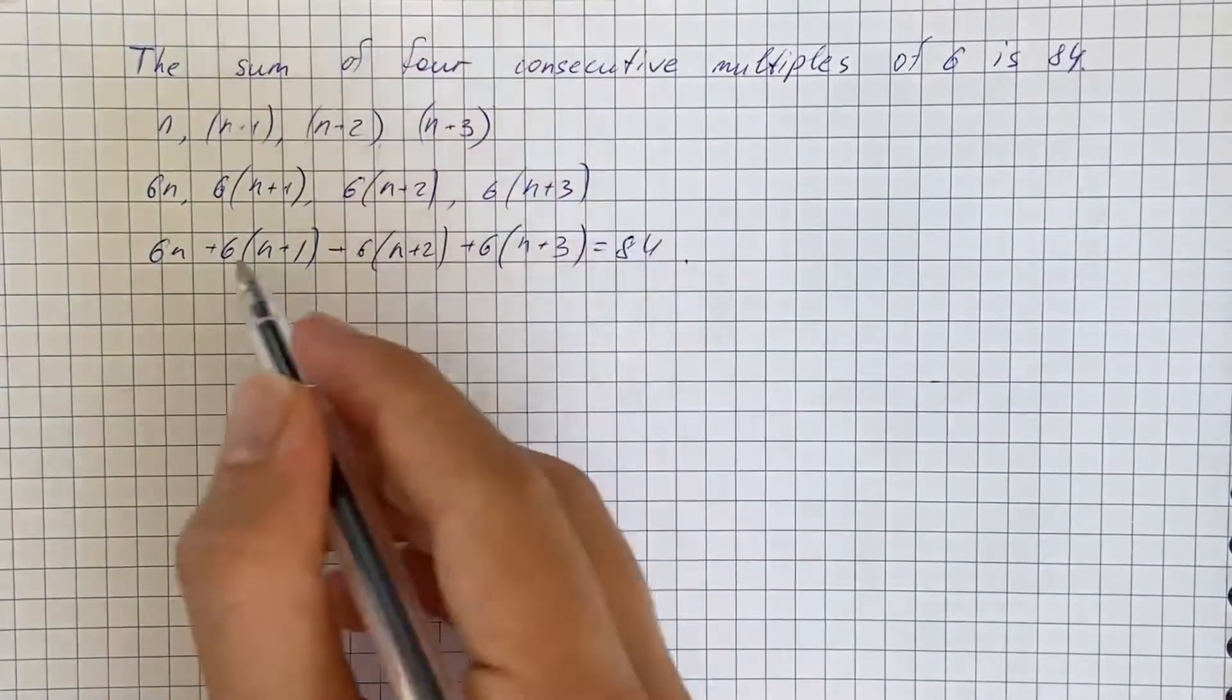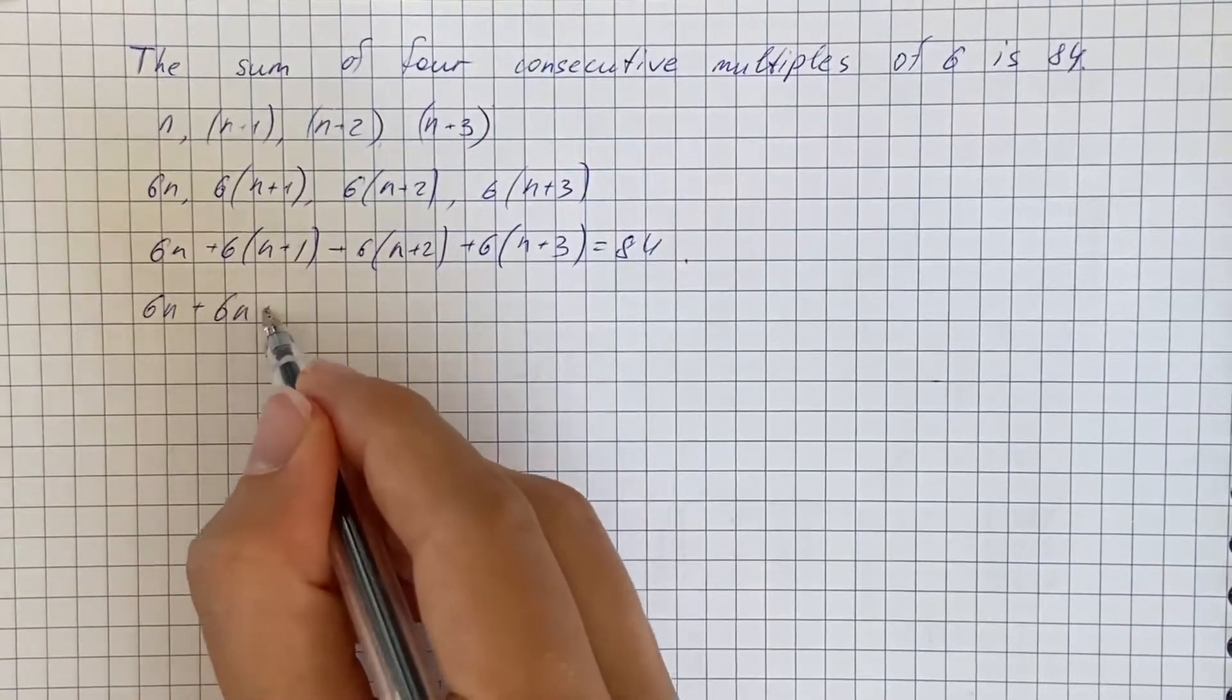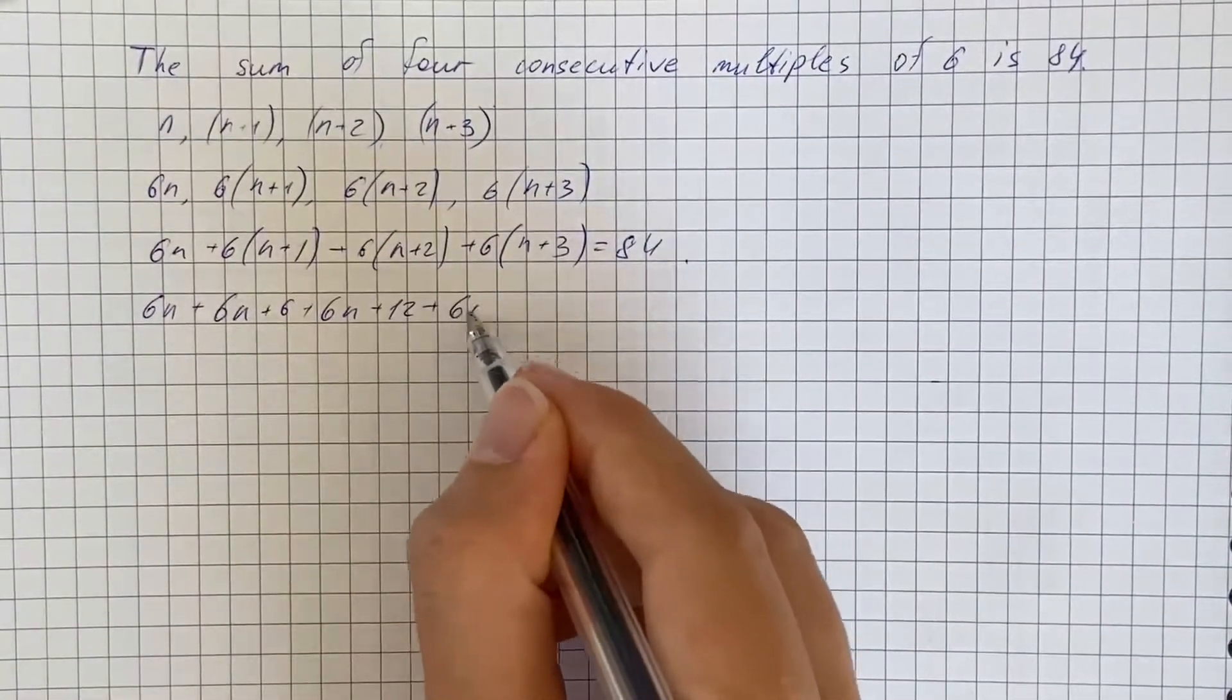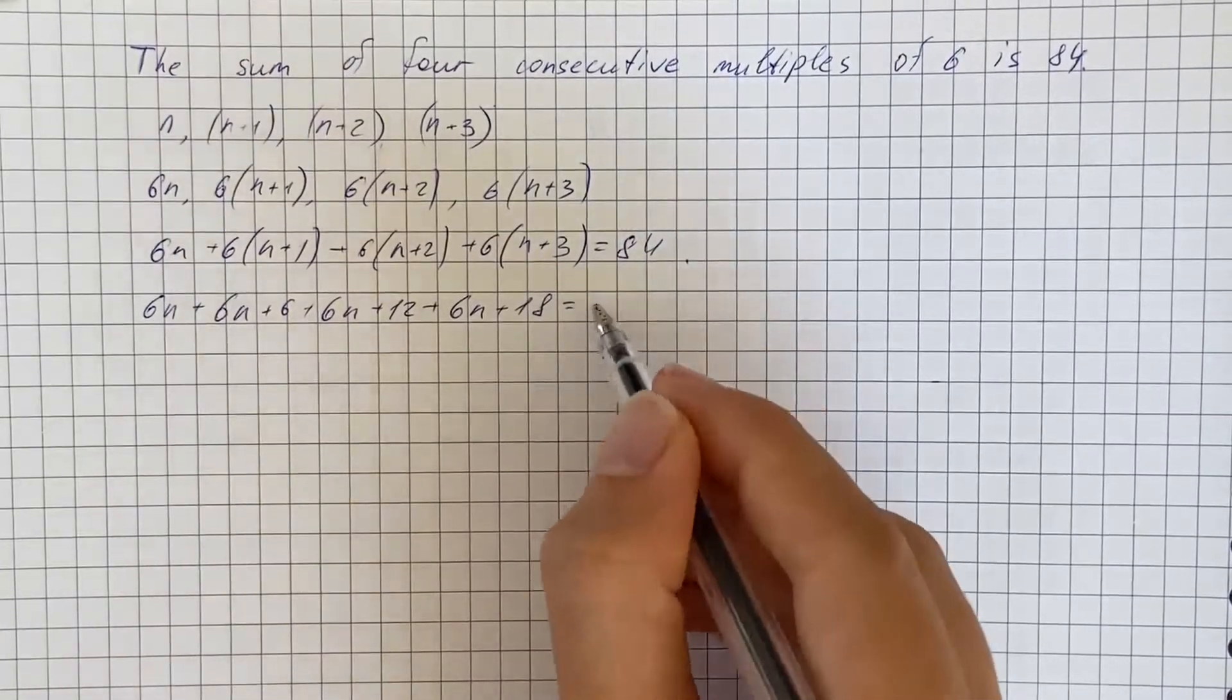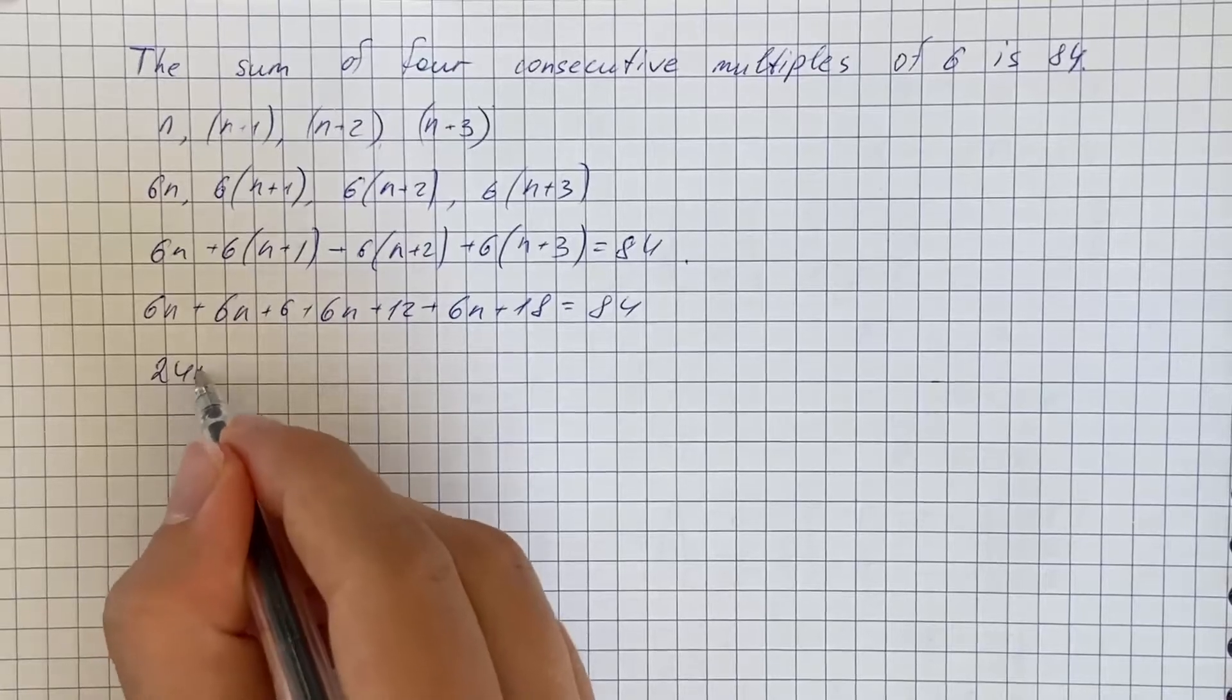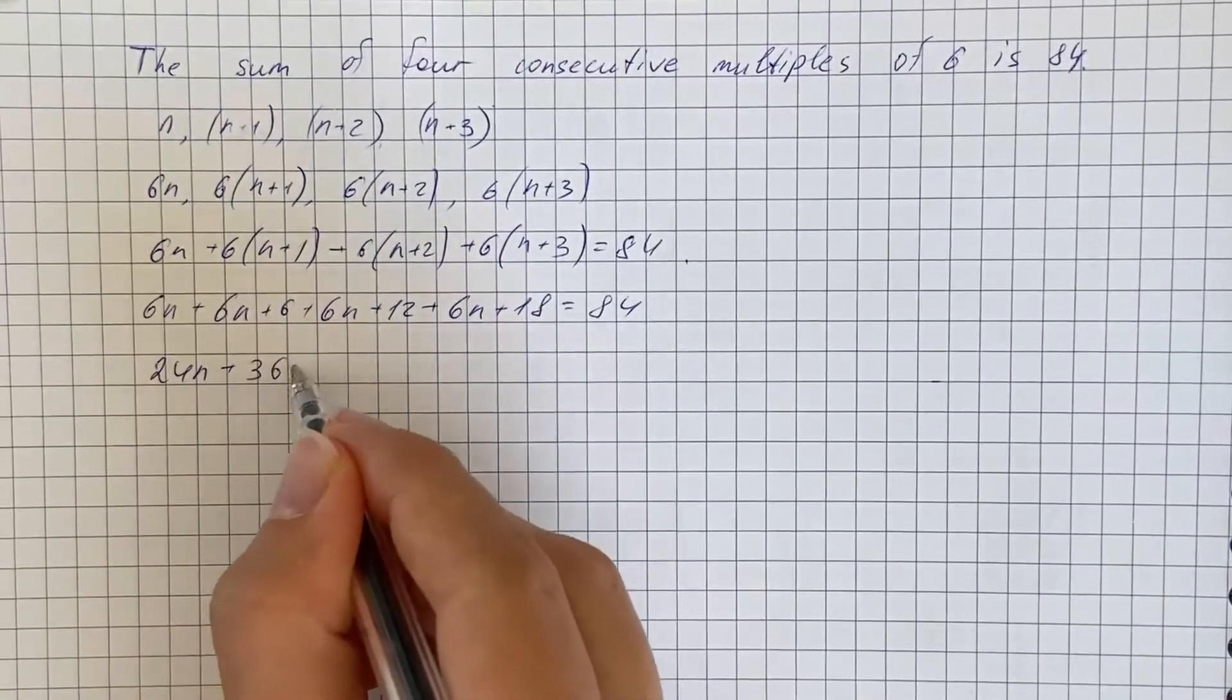So now let's expand brackets and get 6n plus 6n plus 6, 6n plus 12 plus 6n plus 18 equals 84. Therefore, we get 24n plus 36 equals 84.